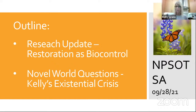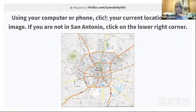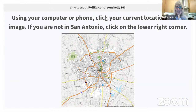Here's the first Poll Everywhere slide. Click on your current location on the image using the address above. If you're not in San Antonio, just click the right corner. Some of you are on the north side, some downtown, mid north side, some inside the loop. Since there are 38 of you, it appears about half are interacting — I just want to see how many people are able to do this.